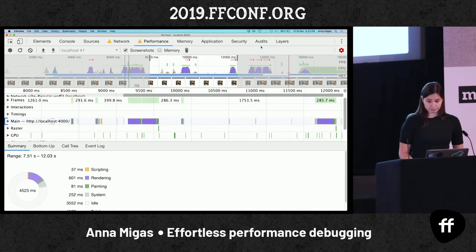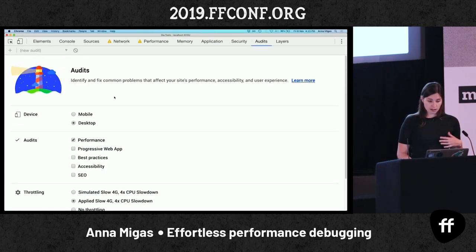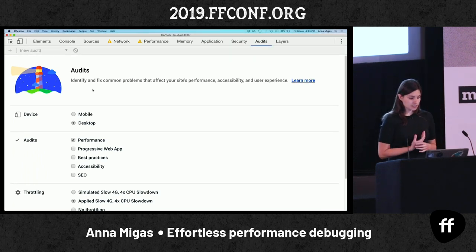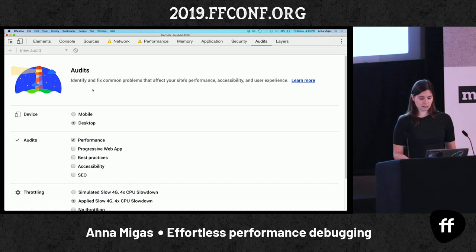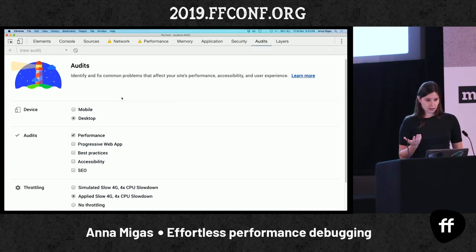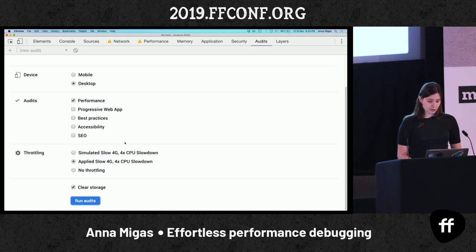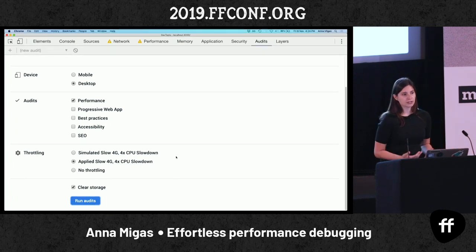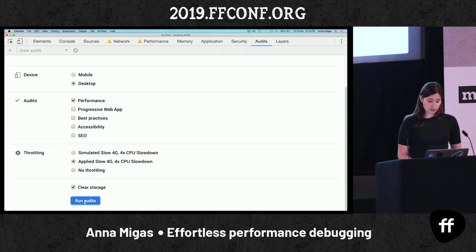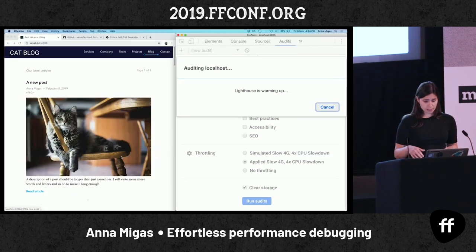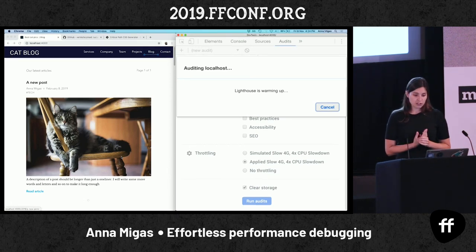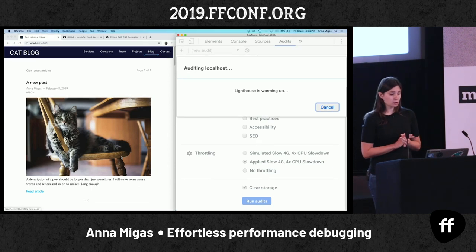Another part I'm using for profiling performance in Chrome DevTools is the audits page. It has Lighthouse embedded. So you can run the Lighthouse audit and see where we stand. So we're going to do an audit now. I'm going to be auditing only the desktop version of the website, with only performance toggled, to make it a bit briefer. I'm using 'applied slow 4G with force CPU slowdown.' So it's a bit better than what we were using when refreshing our page. And I want to clear storage, so I'm just going to click 'run audit.'